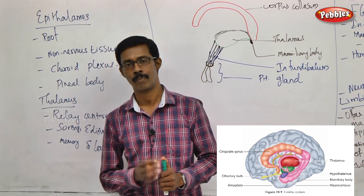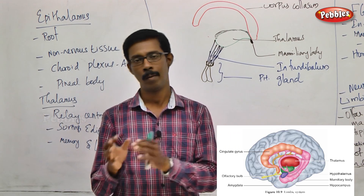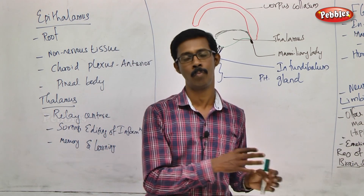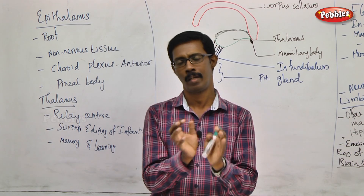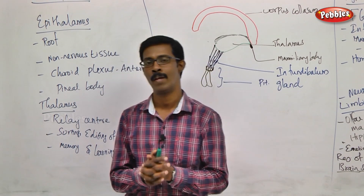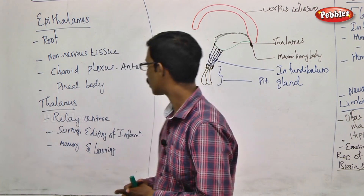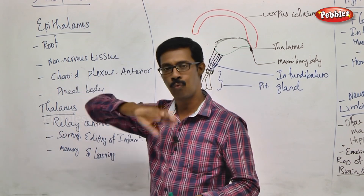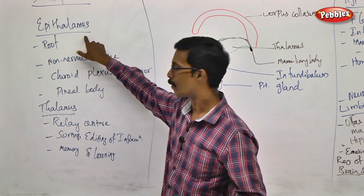This region is also related to another term called the Limbic System. The Limbic System is part of the Diencephalon region, and it also relates to the midbrain region, the hindbrain portion, and the forebrain portion.